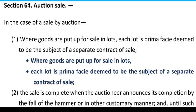अब auction sale का general overview और procedure समझाने के बाद, जो statutory base दिया है — यानि Sale of Goods Act 1930 में जो define किया गया है — वो procedure हम अभी पढ़ते हैं। Section 64 — Auction Sale।